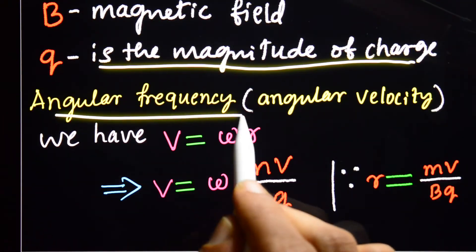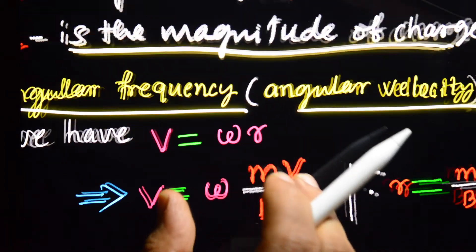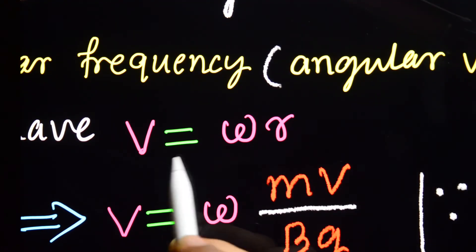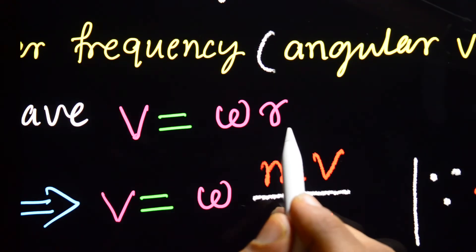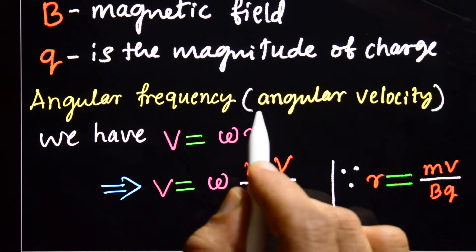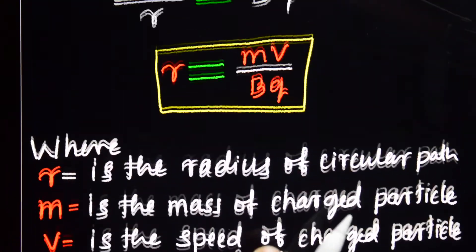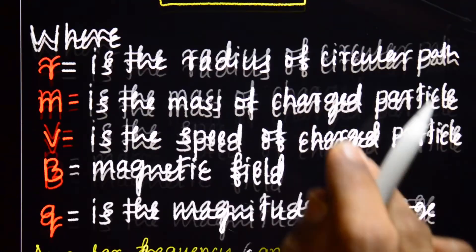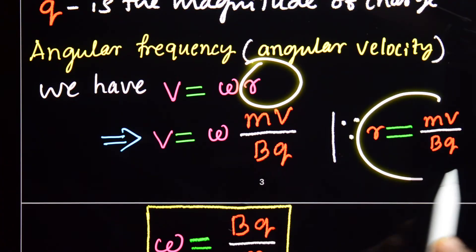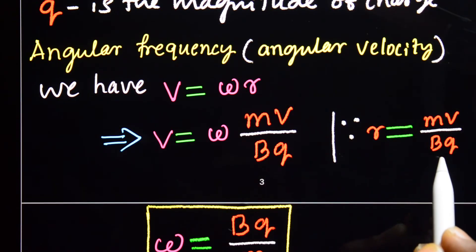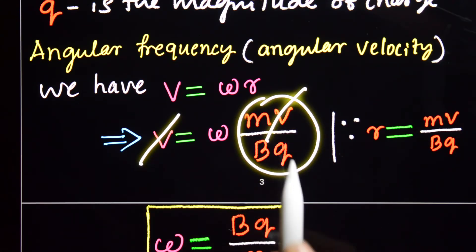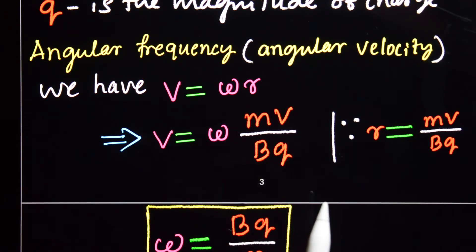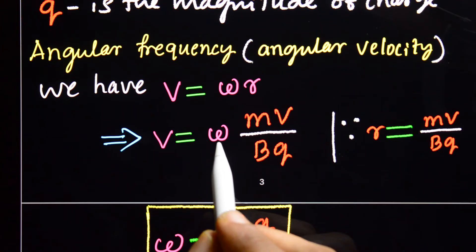Now, what is the angular frequency or angular velocity? We can write V = ω×R. Substituting R = MV/(BQ) into this expression, the V terms cancel. We want omega — the angular frequency or angular velocity.